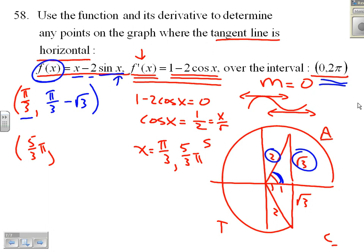Likewise, when I put in 5 thirds pi, I get 5 thirds x minus 2 times sine from this angle. Of course, this is down, so that's negative root 3. Sine of that angle is negative root 3 on 2, cancels with this 2, negatives cancel, I get plus root 3.